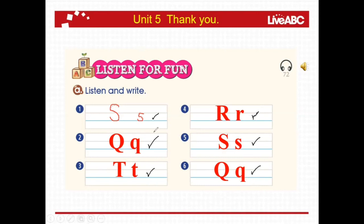Don't forget. Letter S is for a snake. Letter Q is for a queen. Number four is for a rat. Letter S is for a snake. Letter Q is for a queen.